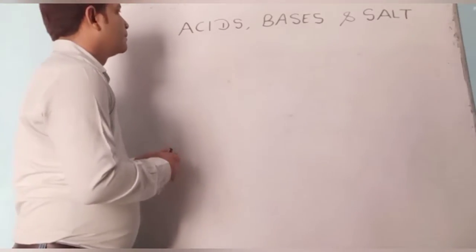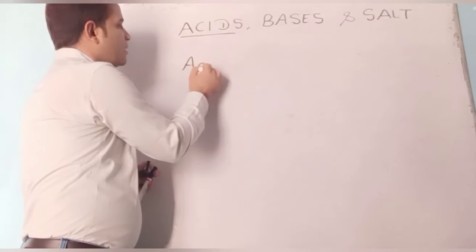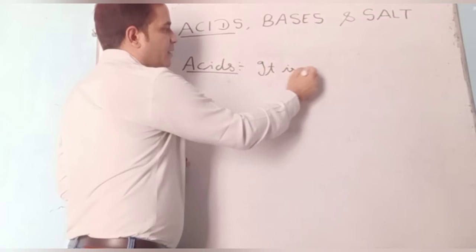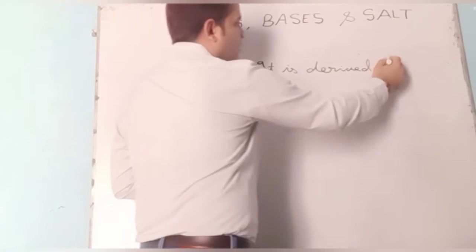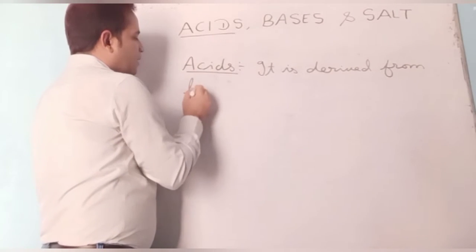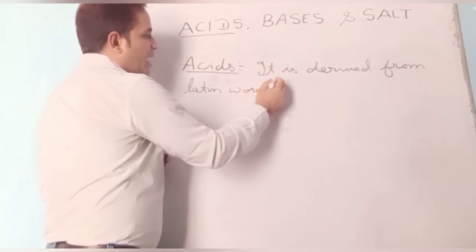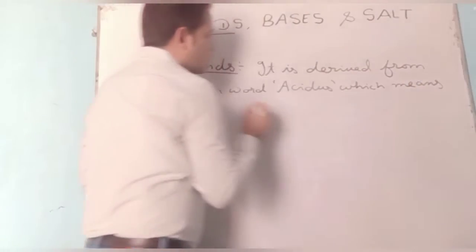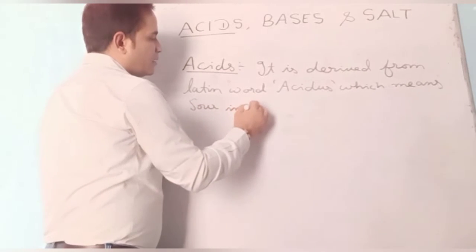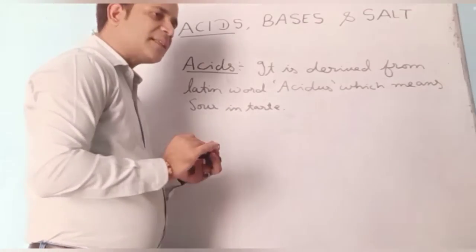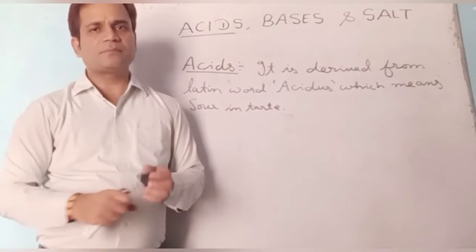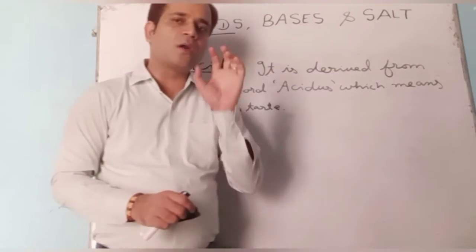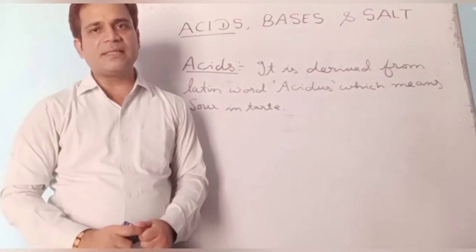Let me start with the term Acids. As the name suggests, the word 'acid' is derived from the Latin word 'Acidus', which means sour taste. If anything we eat tastes sour, then basically that thing is an acid. Simple — jis cheez ko khaane mein khattha lage, woh acid hai.